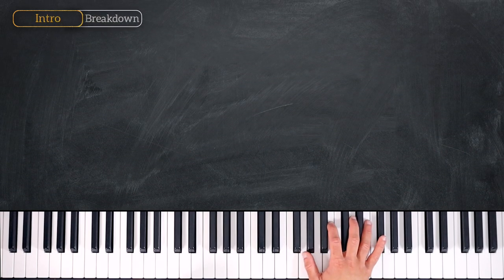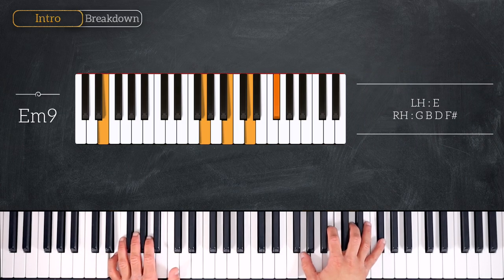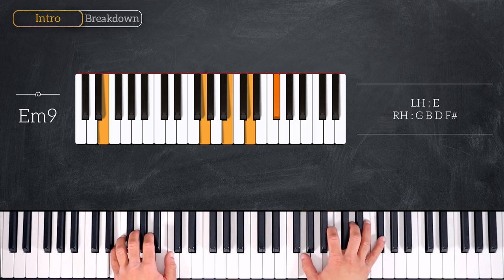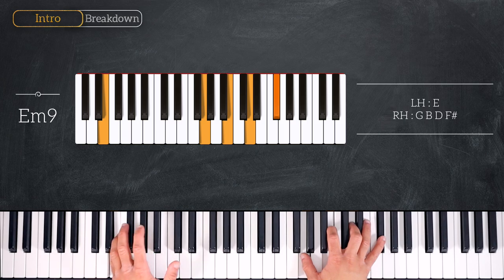We'll start by playing this E minor 9. So we have an E on the bass and G, B, D, F sharp on the right hand. You can also view this chord as a G major 7 over E.